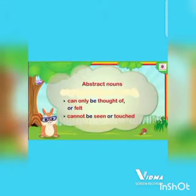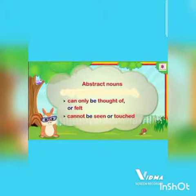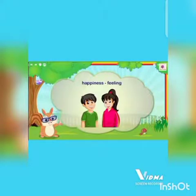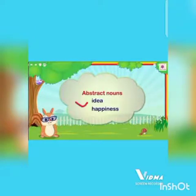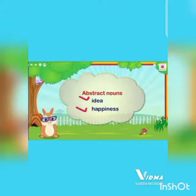Abstract nouns can only be thought of or felt. Abstract nouns name those things that cannot be seen or touched. For example, happiness is a feeling. An idea is a thought. So idea — یعنی ایک سوچ — and happiness — ایک احساس — these are abstract nouns.